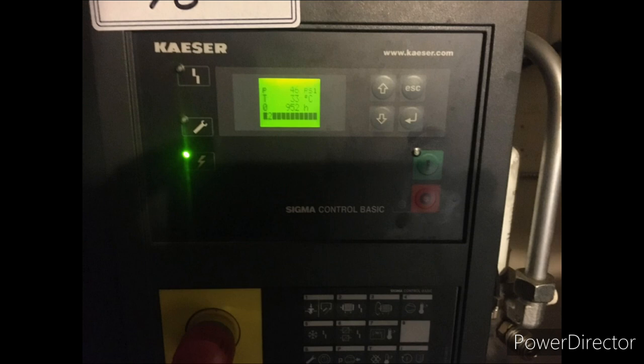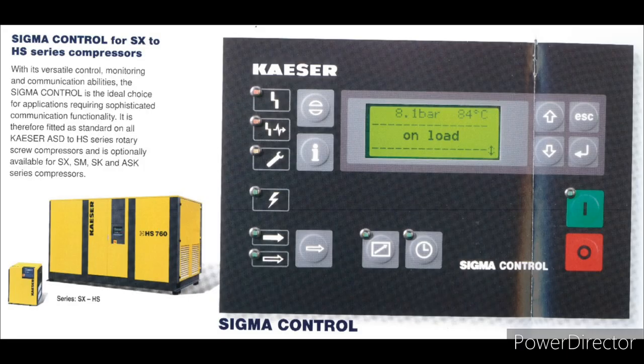Line 3 is the parameter display and settings. Line 4 shows alarm and warning messages. There is also an operating counter display showing the period in which the motor switches on. All indications shown on the display can be reset as per the parameters.